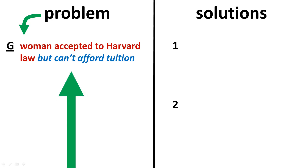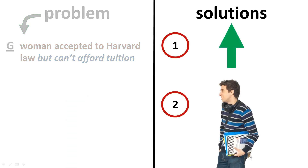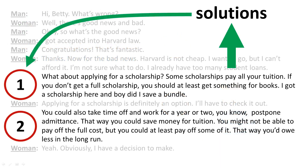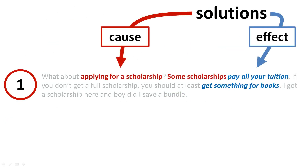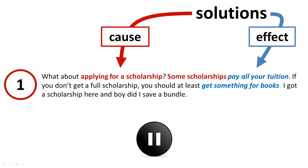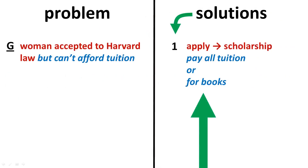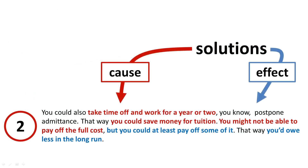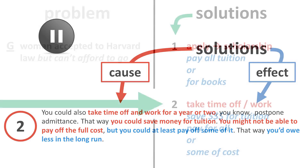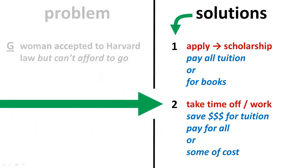After the problem is described, the solutions will follow. In this example, the man suggests two solutions. Note how the first solution is a reason based on cause and effect. Note this solution on your note map using cause and effect. The second solution is also a reason based on cause and effect. Note this solution on your note map using cause and effect.